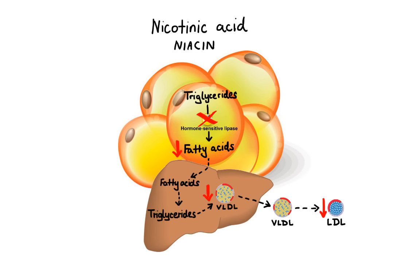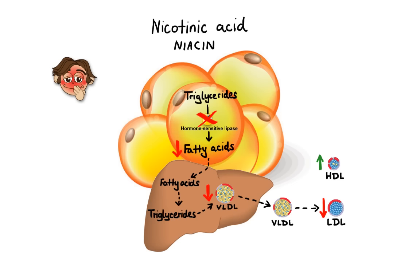Furthermore, niacin increases HDL levels by a few different mechanisms that are still being investigated. When it comes to side effects, one of the most common is flushing, caused by niacin-induced prostaglandin release, which results in cutaneous vasodilation. Next, niacin can compete with uric acid for excretion by the kidney, which can increase risk of hyperuricemia and gout. Lastly, at large enough doses, niacin may also cause liver toxicity.